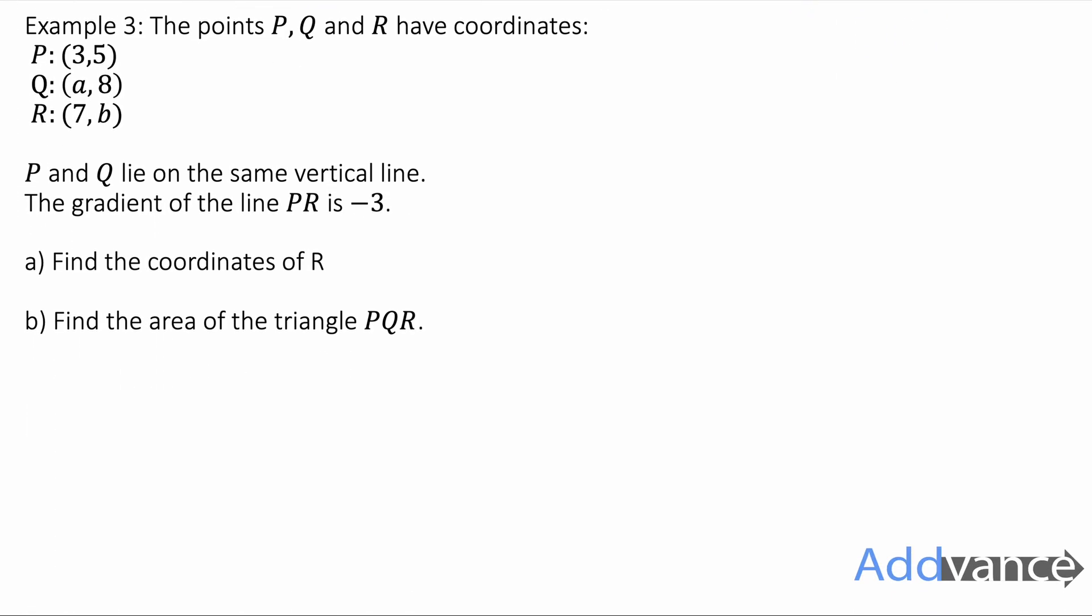The points P, Q and R have coordinates (3, 5), (a, 8) and (7, b). P and Q lie on the same vertical line. The gradient of the line PR is -3. Find the coordinates of R and find the area of the triangle PQR.